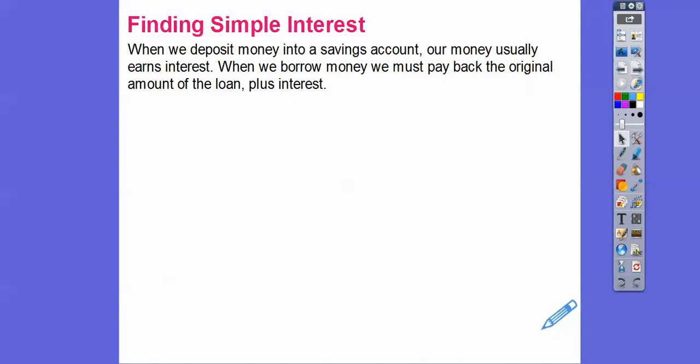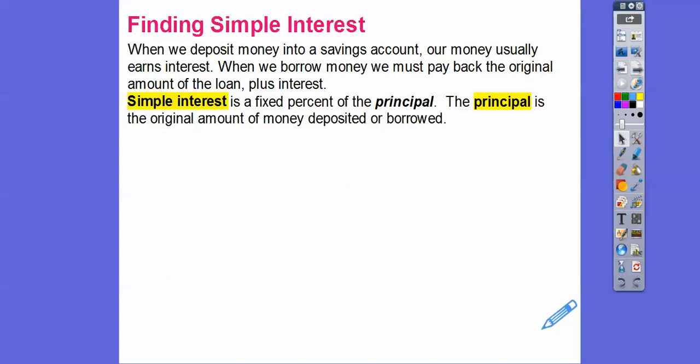All right, so finding simple interest. Now, there's all kinds of different kinds of interest. There's compound interest, there's simple interest, there's other kinds of interest that earn it monthly or quarterly or biannually and stuff. But simple interest is when we deposit money into a savings account, our money usually earns interest. When we borrow money, we must pay back the original amount of the loan plus some interest. Simple interest is a fixed percent of the principal, and the principal is the original amount of money that you deposit or you borrow.